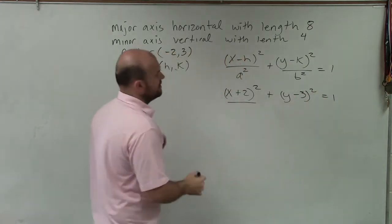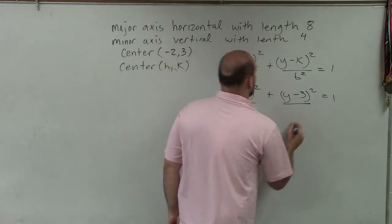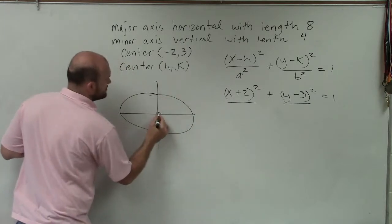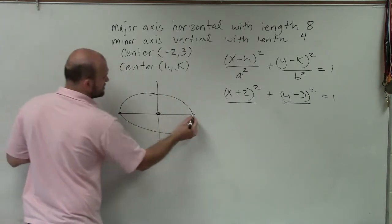Now, the only problem is we don't know what a squared and we do not know what b squared is. But let's go ahead and graph an ellipse here. And let's pretend here's the center, here's vertices, and here's vertices.